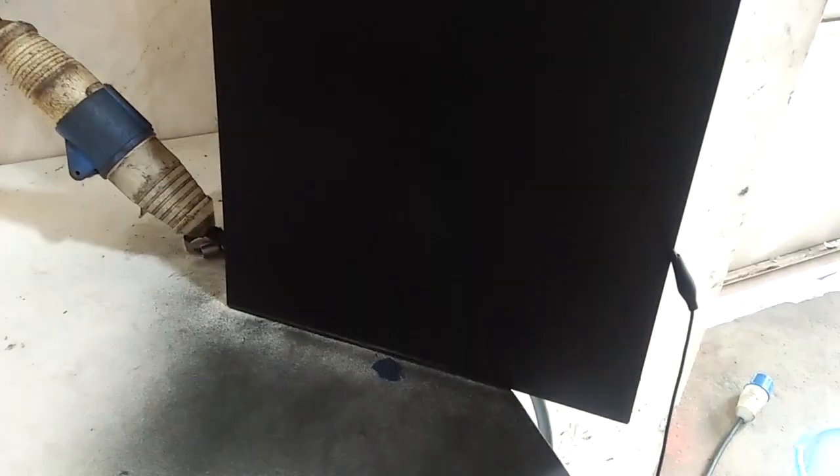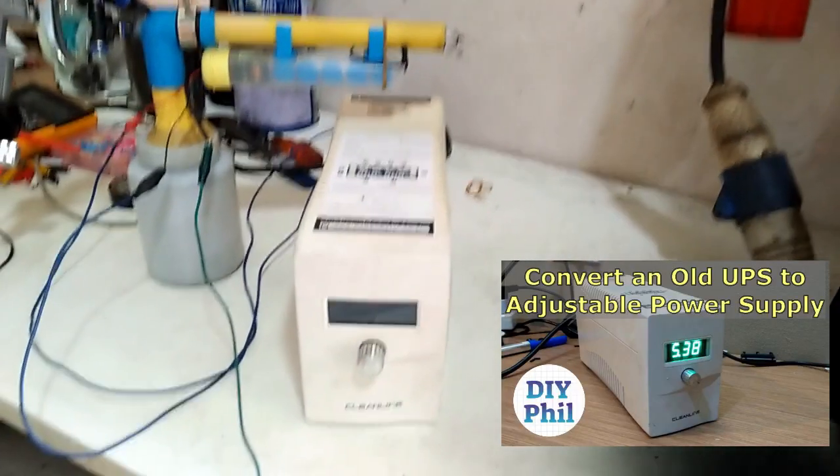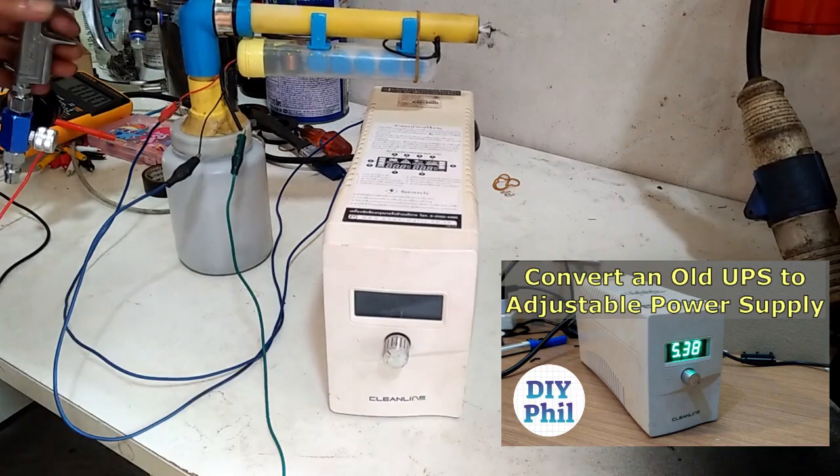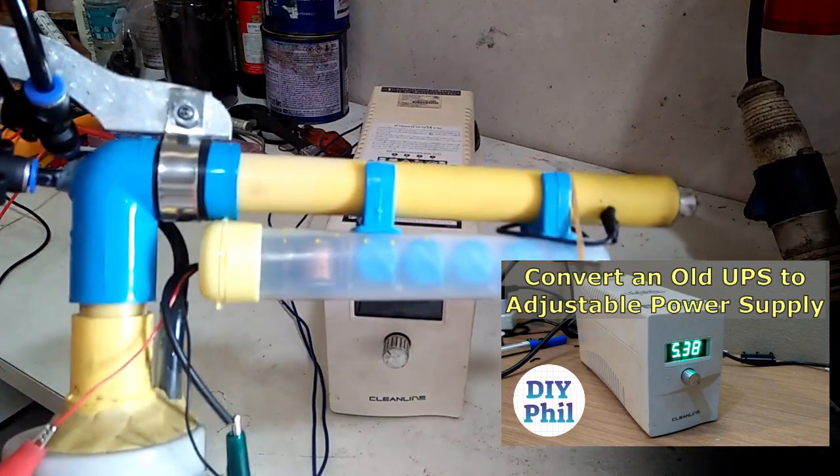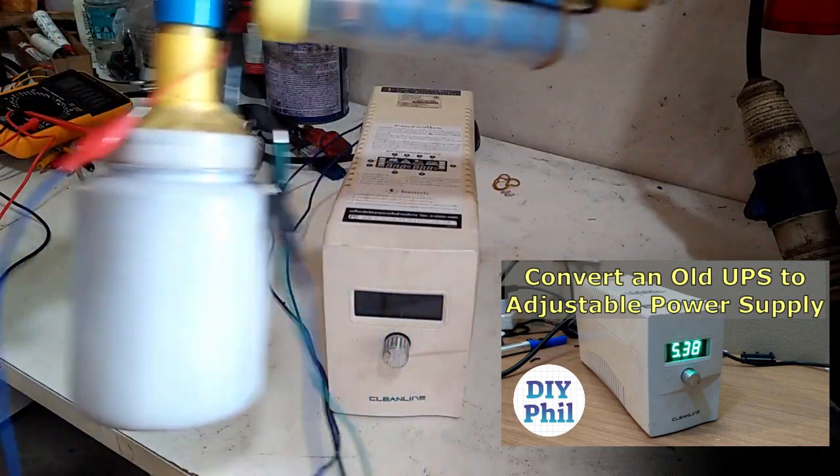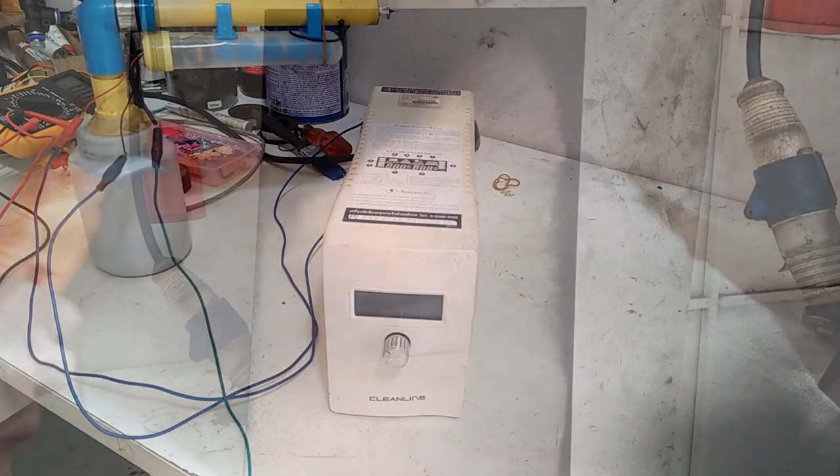This is way much better than my first version of the power supply using the taser module. The low voltage DC input to the cascade came from that bench variable voltage power supply I made out of an old UPS. So go check out my other video how I made that.